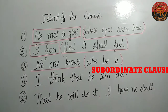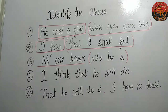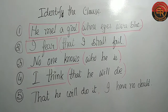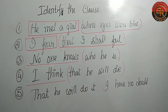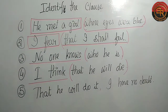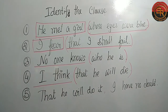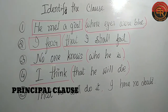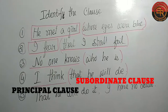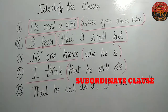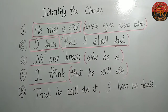Now let's look at the fourth question: 'I think that he will die.' Here 'think' is the finite verb, so 'I think' is the principal clause. 'That he will die' is talking about what I think — it gives more information about the verb 'think'.